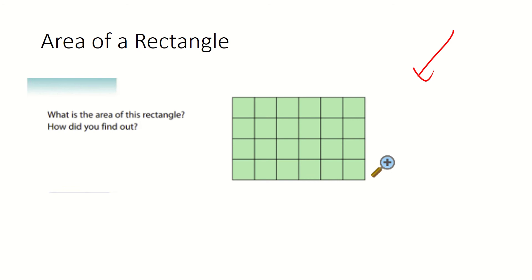So perimeter is all about the exterior, whereas area is the interior. There's going to be a formula that obviously shows how to do this quicker.